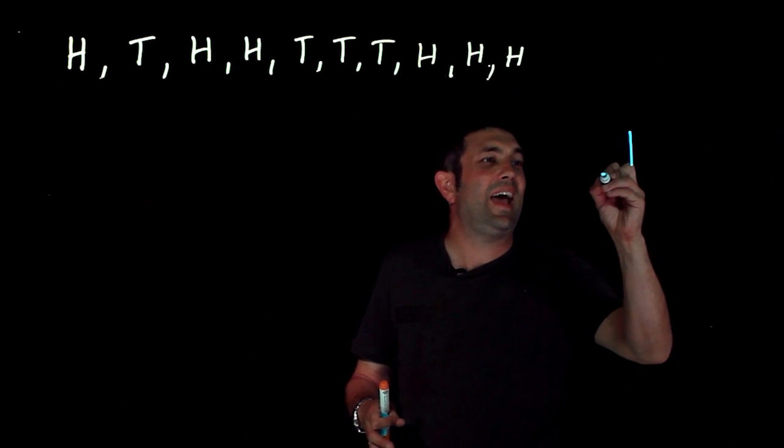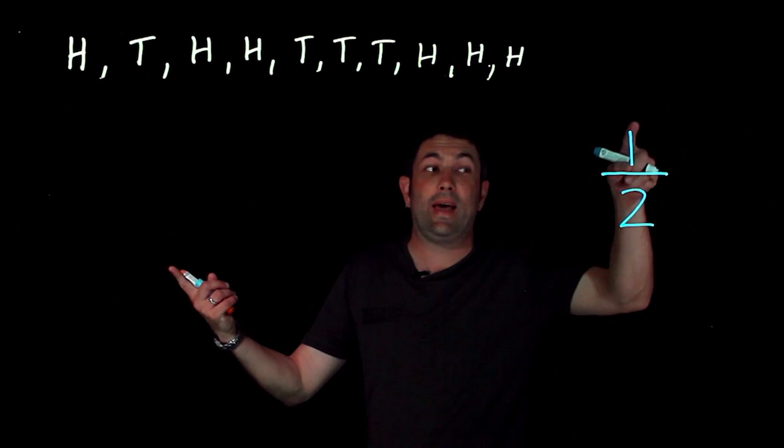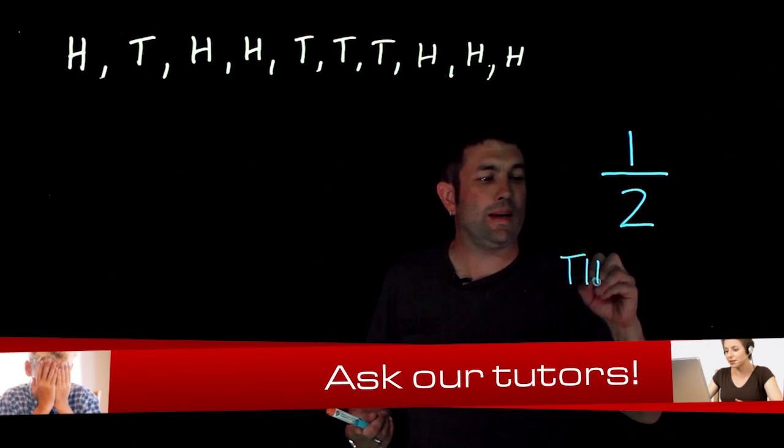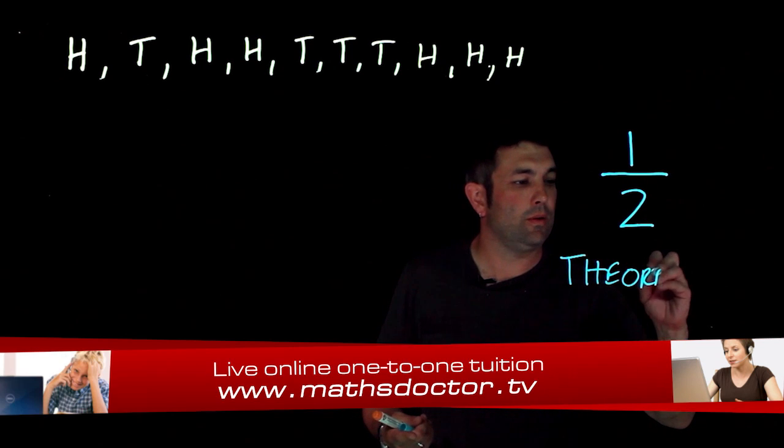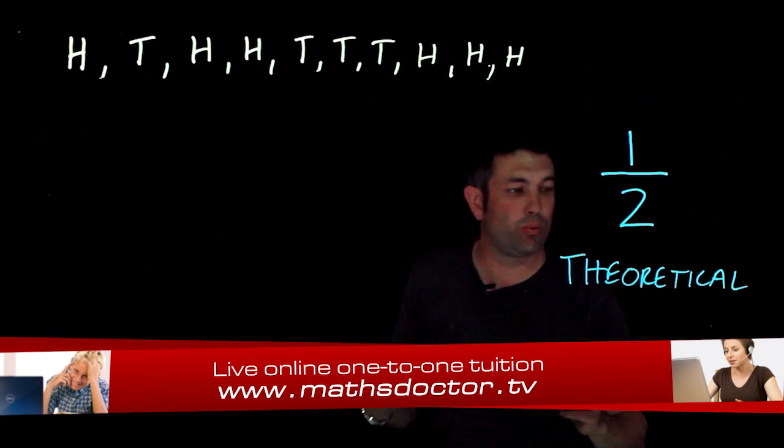And the probability of getting a head on the next row would be a half, because there's one head and two sides all together. So that is known as the theoretical, and you might see this in a test or exam paper, theoretical probability.